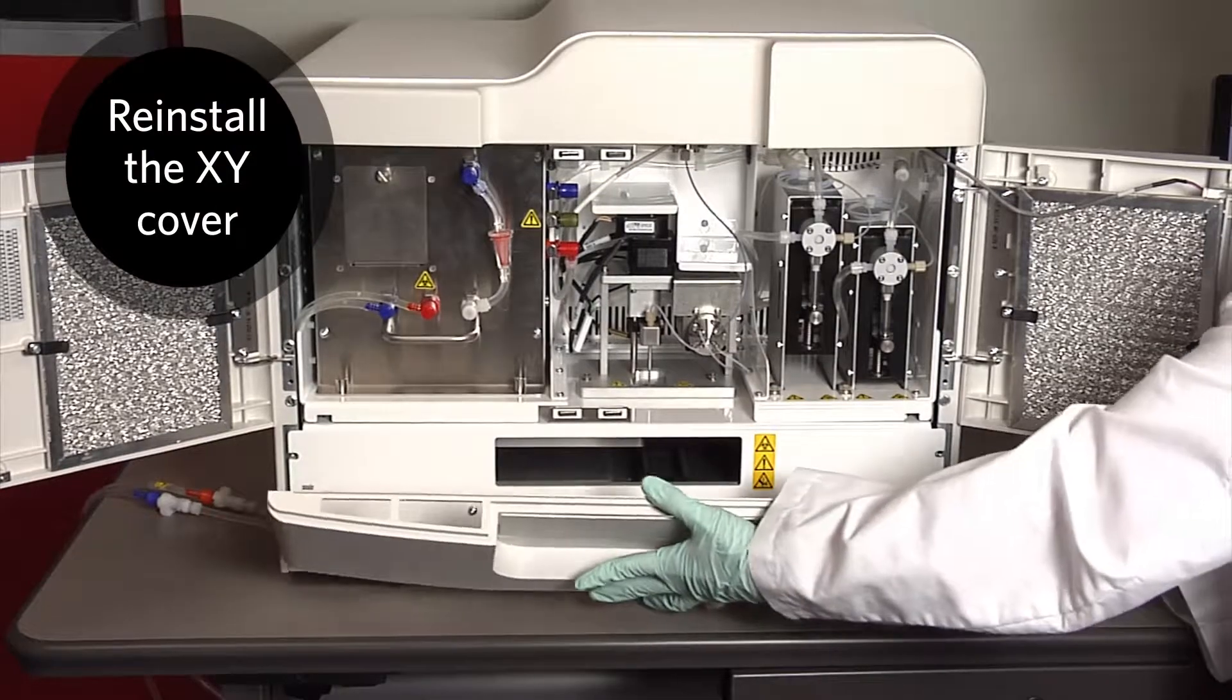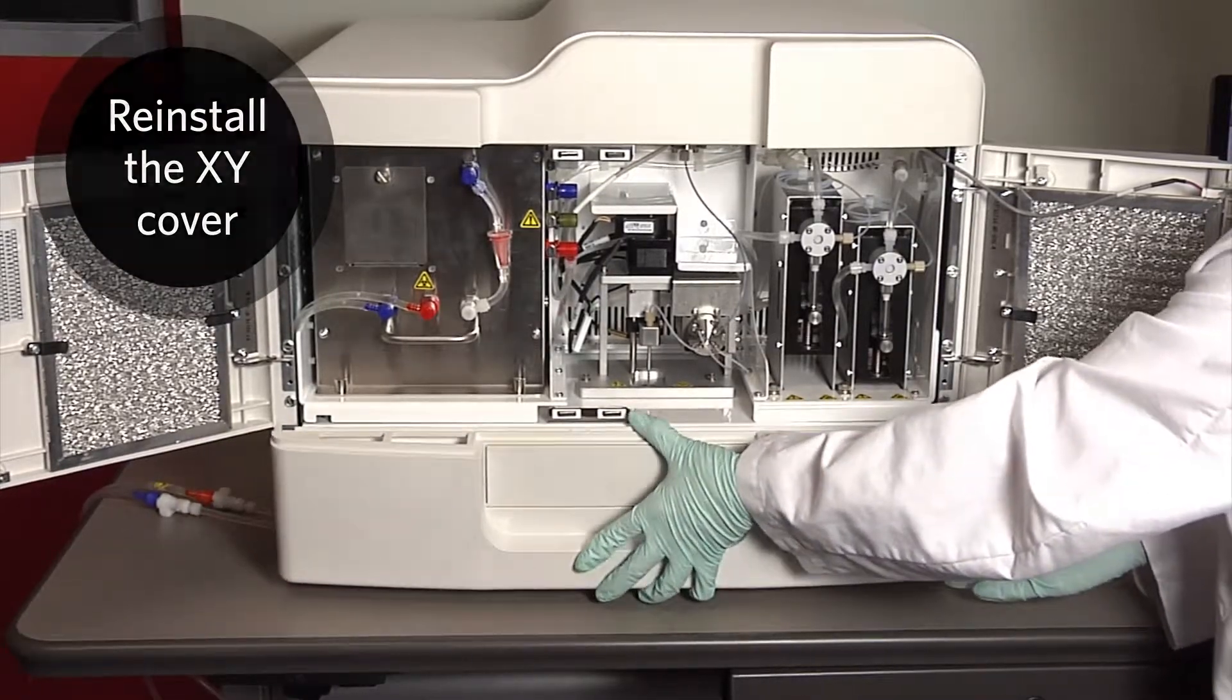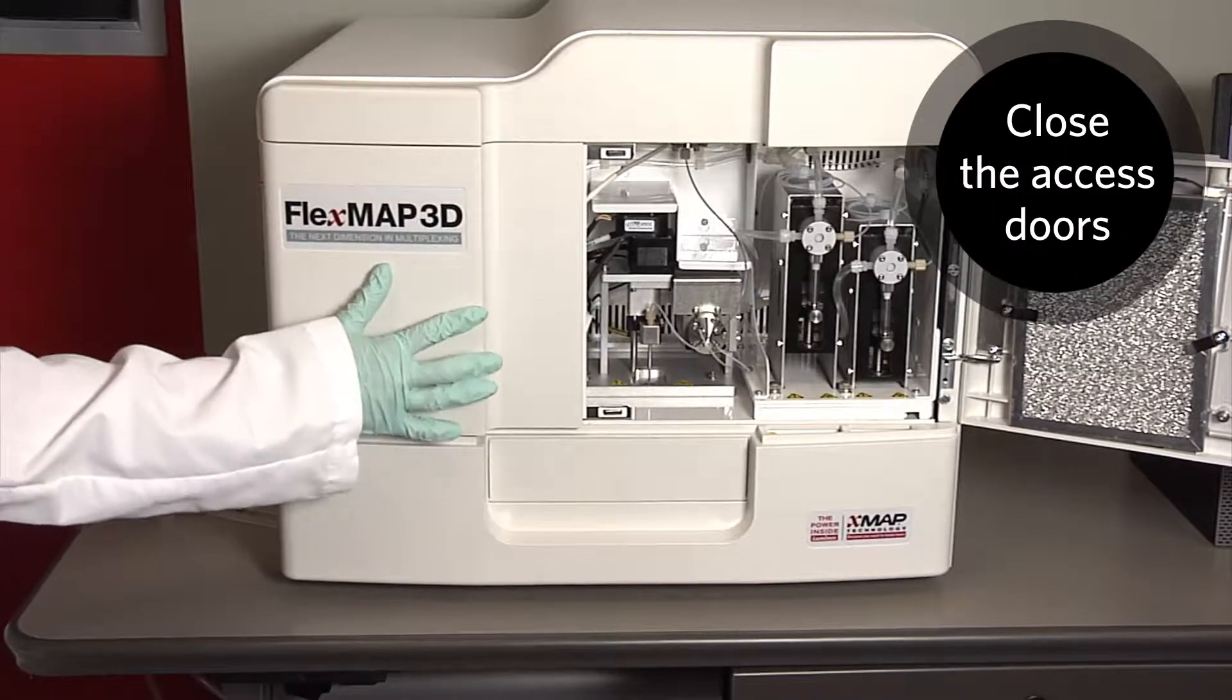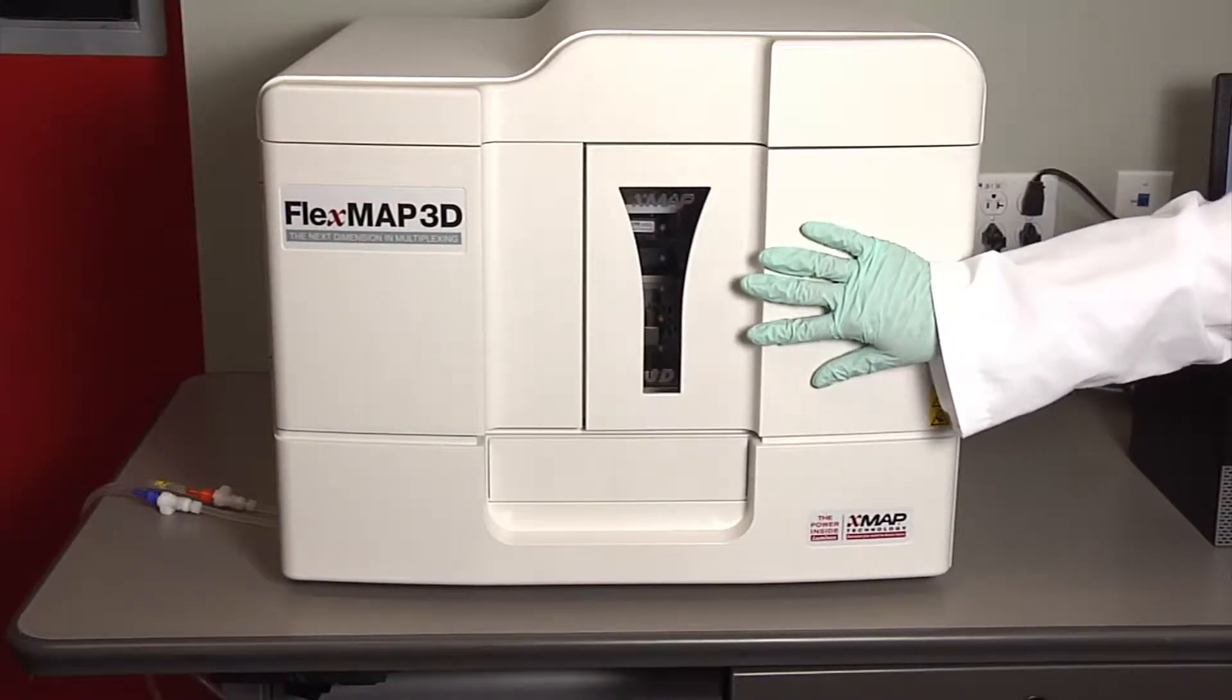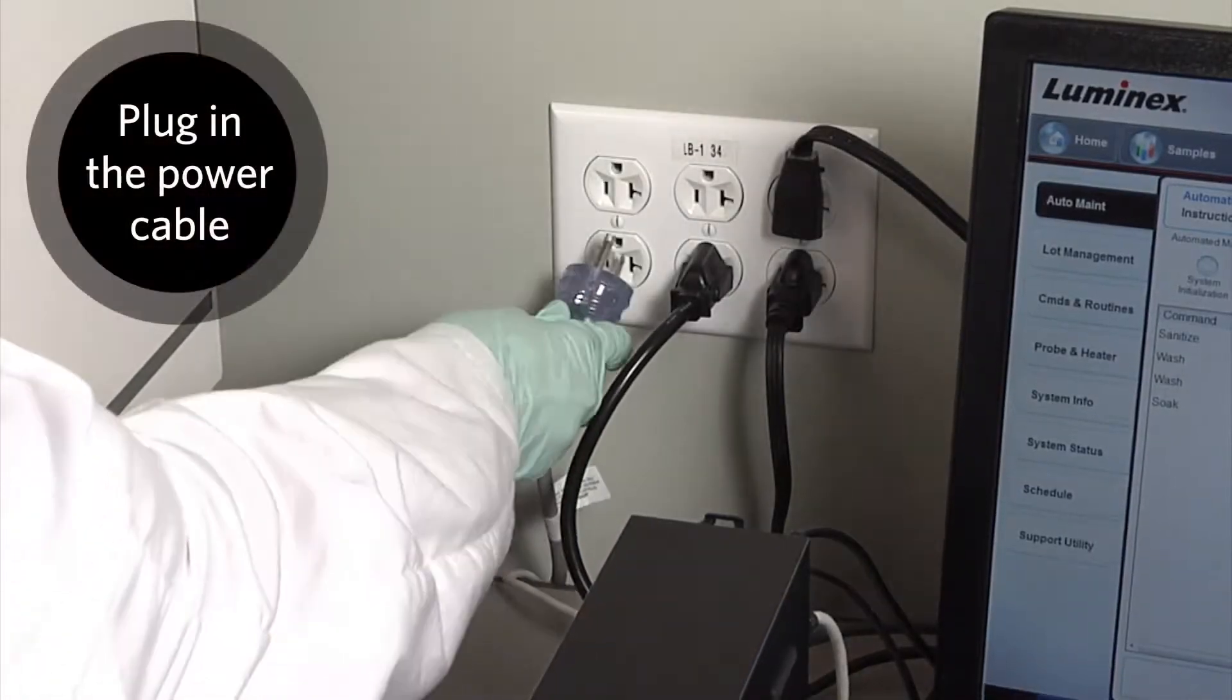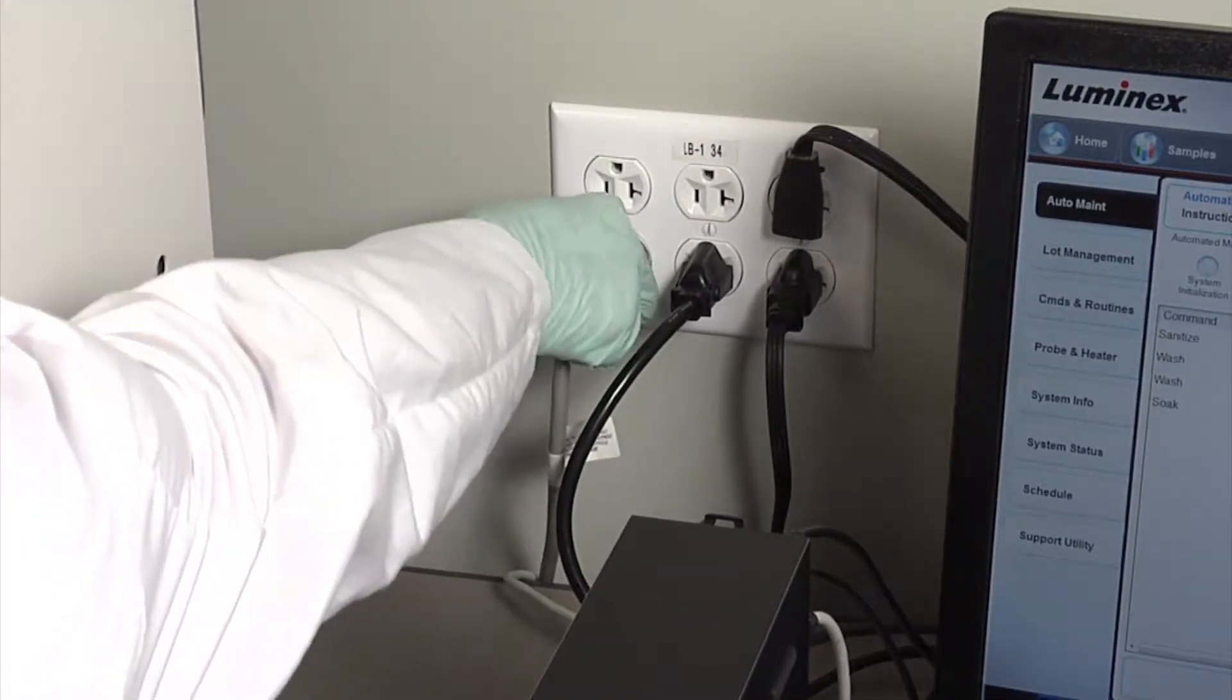Reinstall the XY cover and close the access doors. Plug in the power cord and turn on the FlexMap 3D instrument.